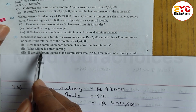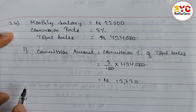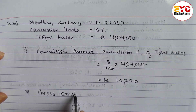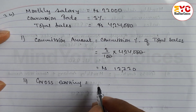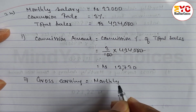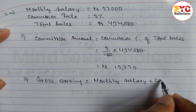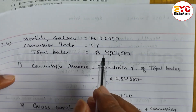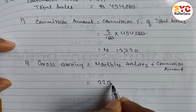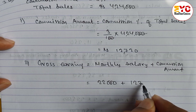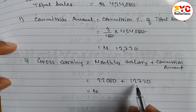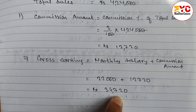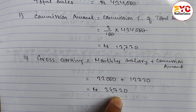Question number 2: what will be his gross earning? Gross earning is equal to monthly salary plus commission amount. Monthly salary is 22,000, plus commission amount 12,720. When you add, we get 34,720. So gross earning is Rs. 34,720.